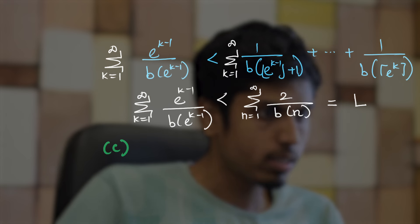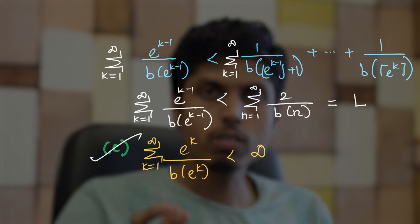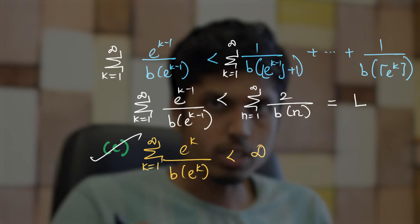So, option C that is summation k equal to 1 to infinity e^k/b(e^k) is less than infinity will be correct. Also, you can work on this through elimination.